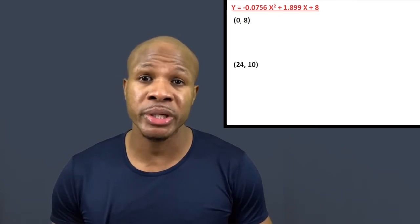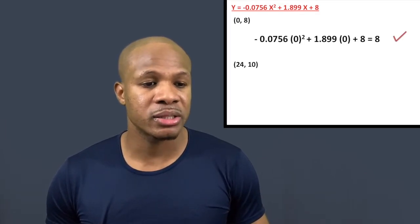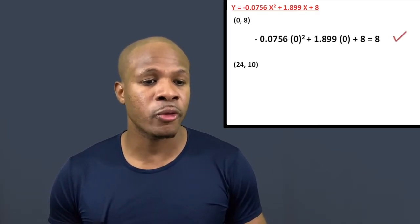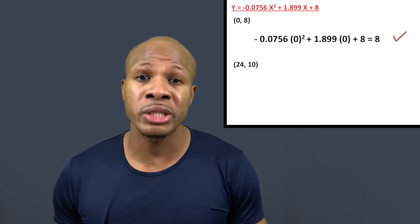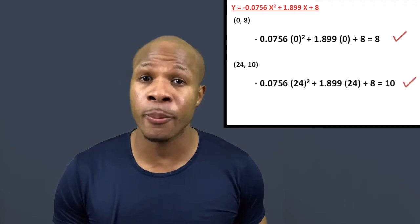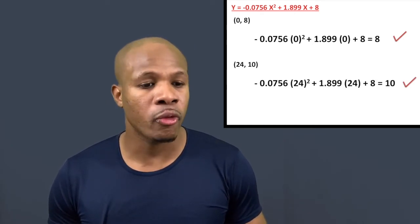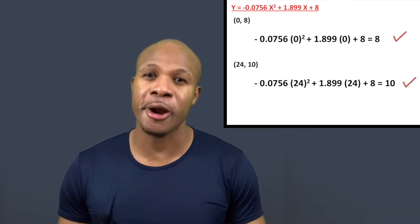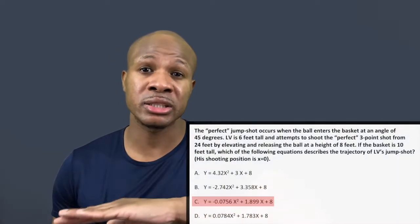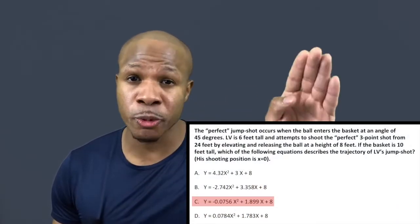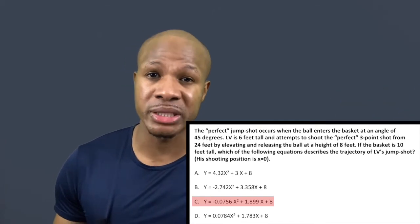Let's verify answer choice C. Plugging in x = 0 for x gives y = 8 — the release point checks out. Plugging in x = 24 gives y = 10 — the basket height checks out. This parabola has the correct release point and the correct made-shot point, so C is confirmed as the right equation.